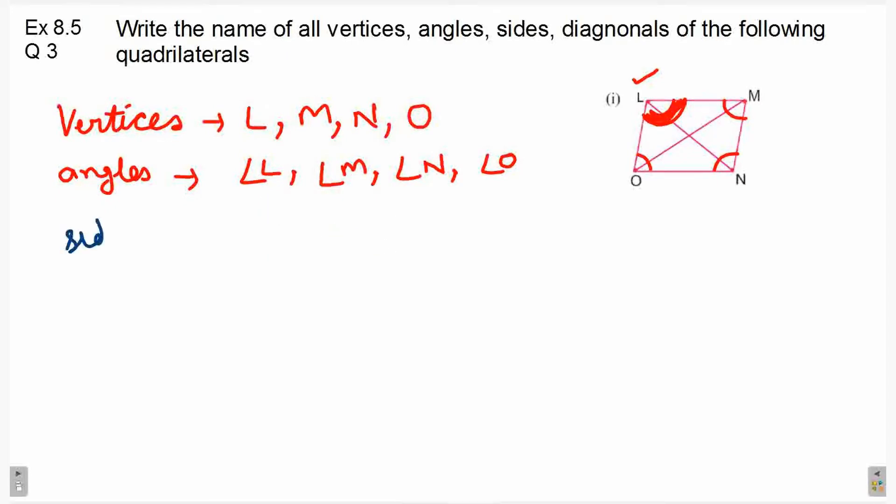Next is sides. Now, sides are the four line segments which join us. So, ON, NM, ML, and LO.